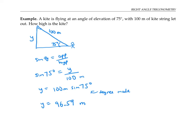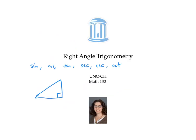To remember the definitions of the trig functions, you can use the mnemonic SOH-CAH-TOA, and the fact that secant is the reciprocal of cosine, cosecant is the reciprocal of sine, and cotangent is the reciprocal of tangent.